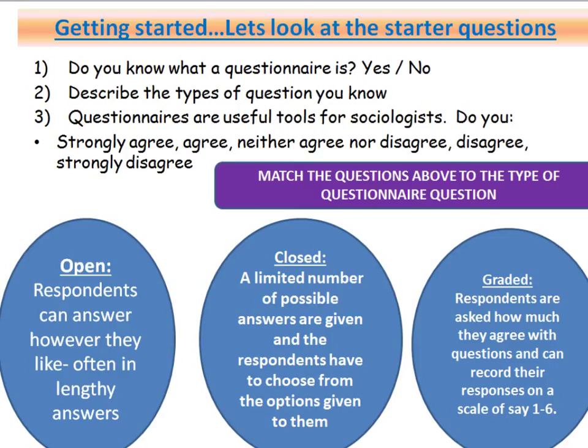Graded questions are a particular type of closed question. In a graded question, respondents are asked how much they agree with a particular statement. For example, 'questionnaires are useful tools for sociologists' — do you strongly agree, agree, neither agree nor disagree, etc. — that's an example of a graded question.